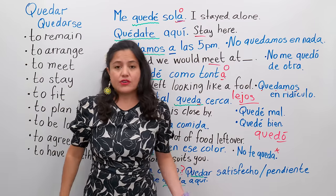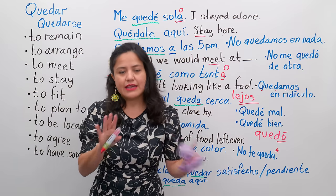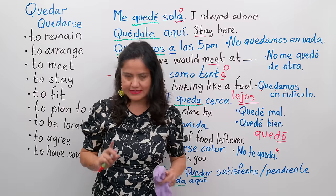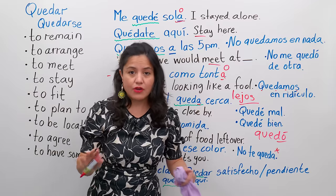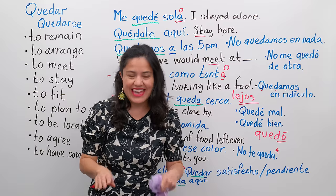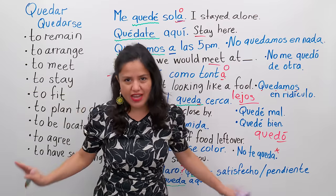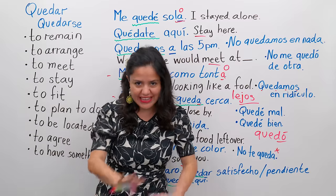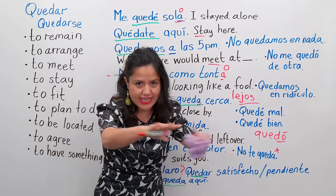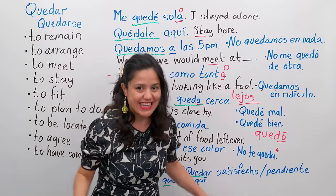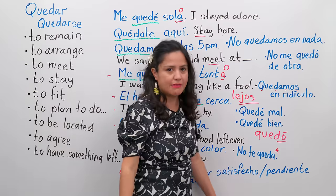Now, if I tell you a secret — si te digo un secreto — I could say: hey, escucha esto — esto se queda aquí. What I told you stays here. Esto se queda aquí. Es nuestro secreto. No le digas a nadie del verbo quedar — solo tú aprende. Esta información se queda aquí — it stays here.